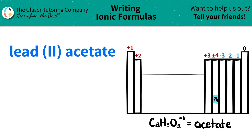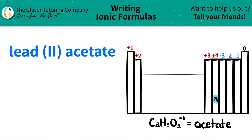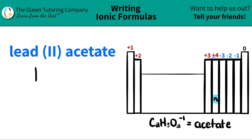Just know that lead is a metal. There is a staircase on the periodic table, and the rule is that all elements to the left of this staircase are all metals except for hydrogen. So lead, even though it looks like it's in non-metal territory, lead is always a metal. So I'm going to put Pb over here.